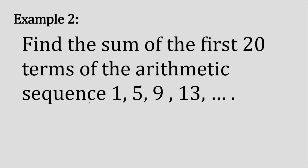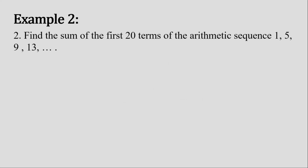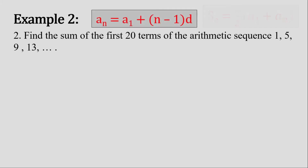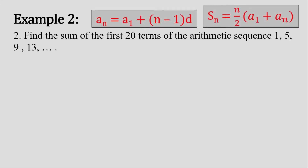Example number 2. Find the sum of the first 20 terms of the arithmetic sequence 1, 5, 9, 13. We need to find a sub 20 before we could answer this question. We will use these two formulas again.